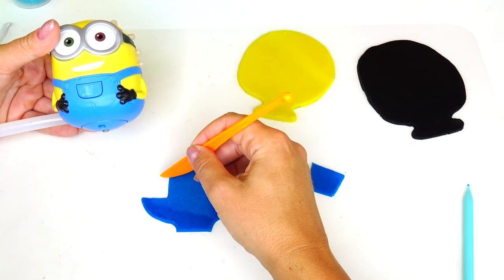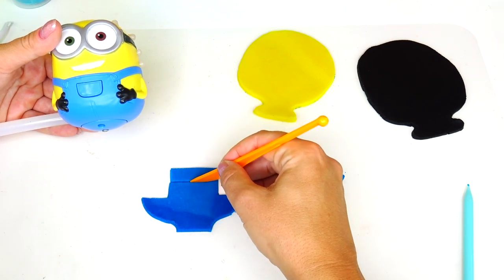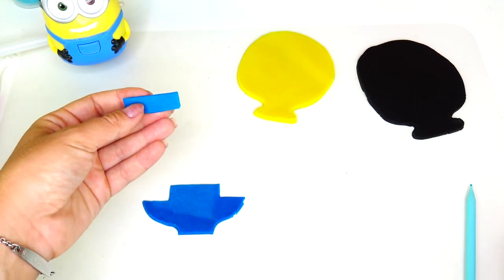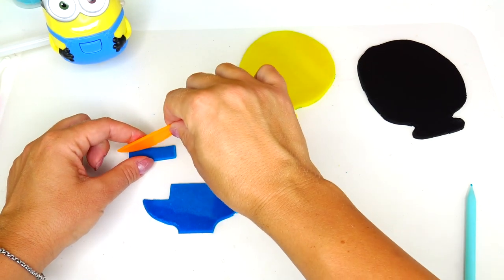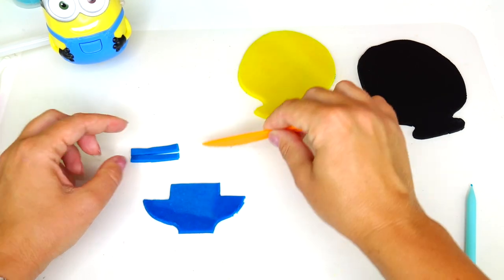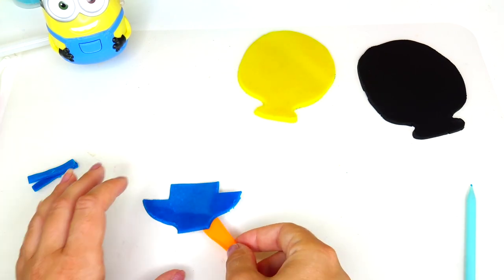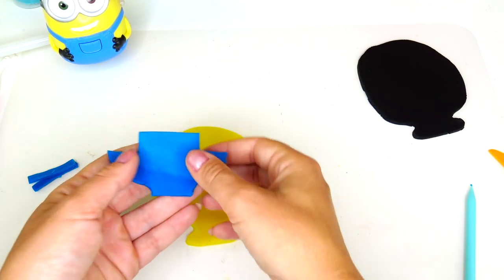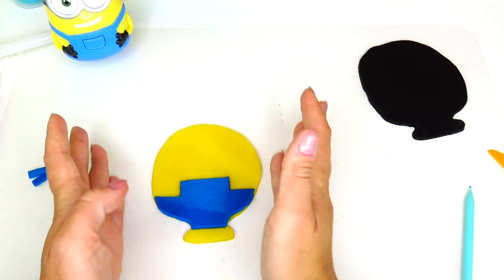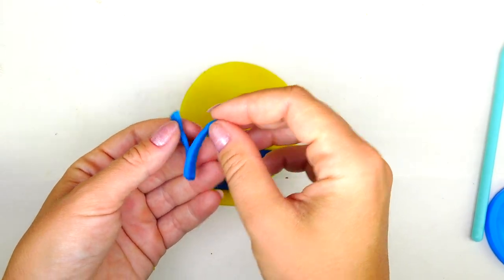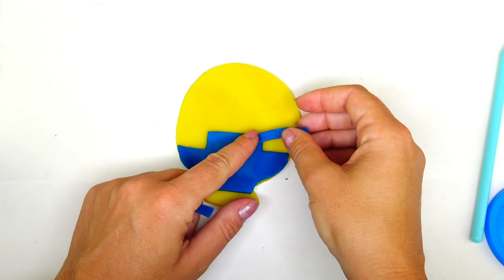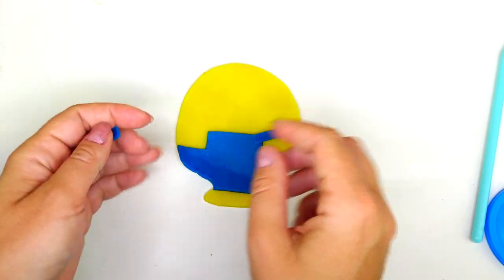I think we should go a little bit lower, maybe this much. This little rectangle piece is actually perfect because we can cut it in half and use these two parts for the straps. Now carefully lifting this piece and placing it on top of the yellow just like that.